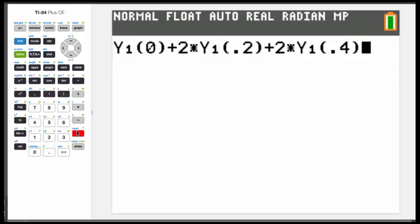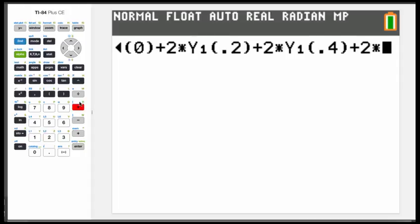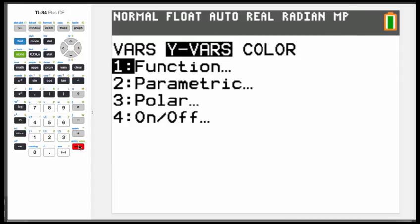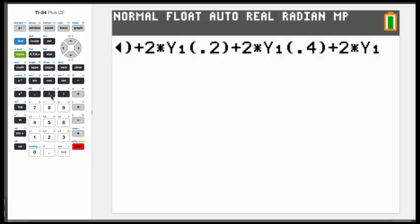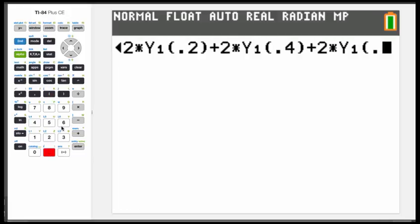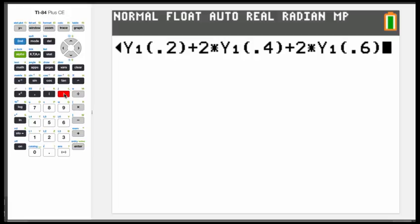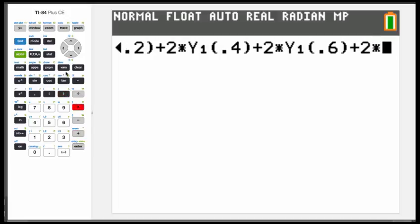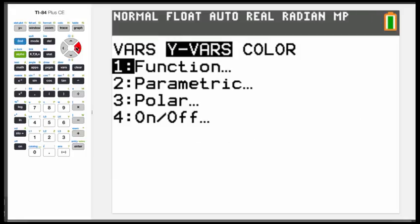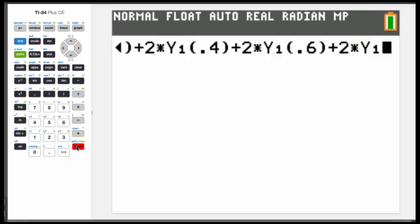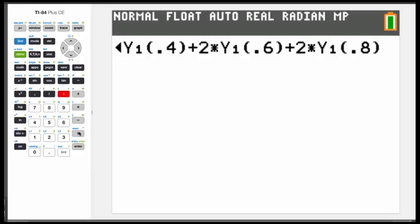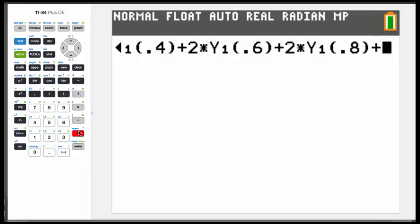Plus 2 times the function value at 0.6. Plus 2 times the function value at 0.8. And finally, the function value at the end at 1.